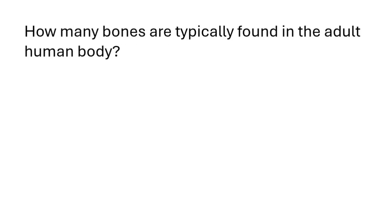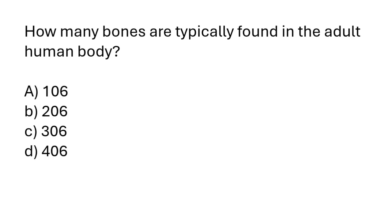How many bones are typically found in the adult human body? 106, 206, 306, 406. The correct answer is option B: there are 206 bones typically found in the adult human body.